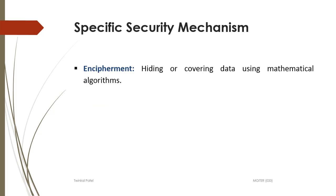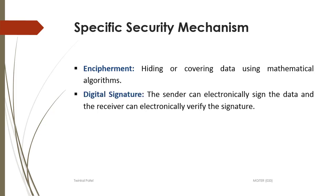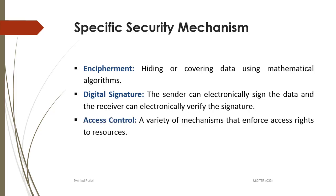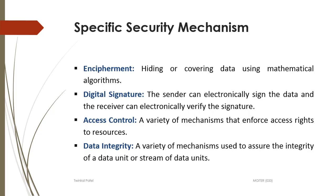The first specific security mechanism is encipherment, which means hiding or covering data using mathematical algorithms. Encipherment contains encryption and decryption techniques that use mathematical algorithms for transferring data. Next is digital signature, where the sender can electronically sign the data and the receiver can electronically verify the sender's signature. Next is access control, which is a variety of mechanisms that enforce access rights to resources. Next is data integrity, where a variety of mechanisms are used to assure the integrity of a data unit — for example, a checksum mechanism is used.